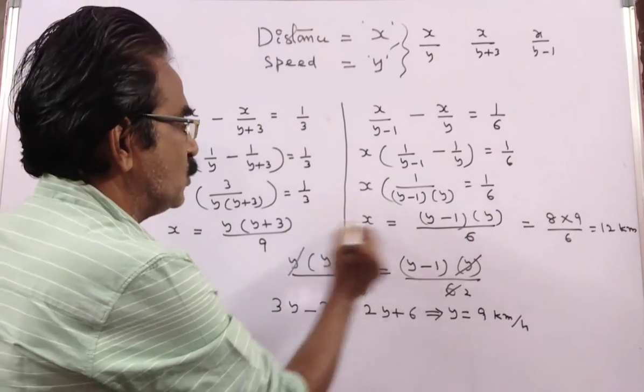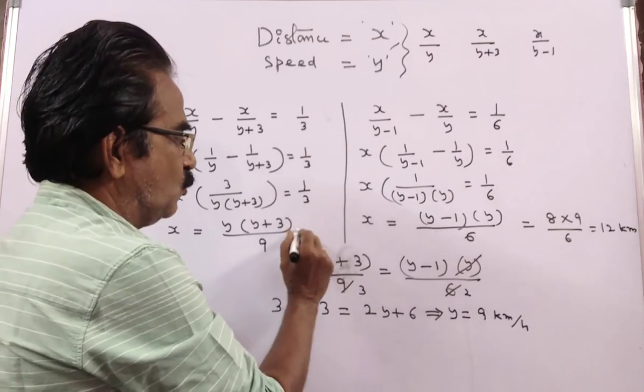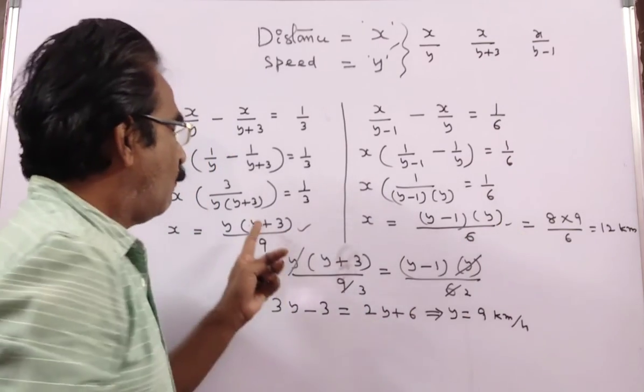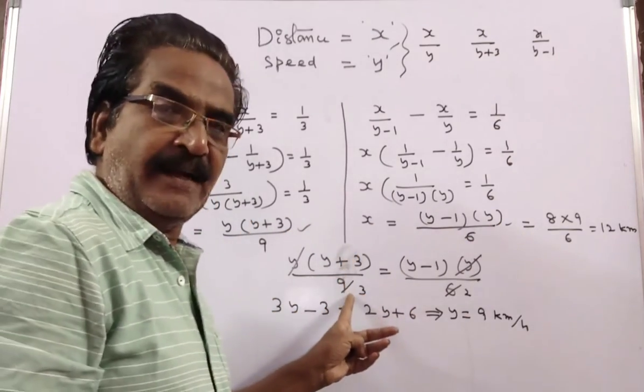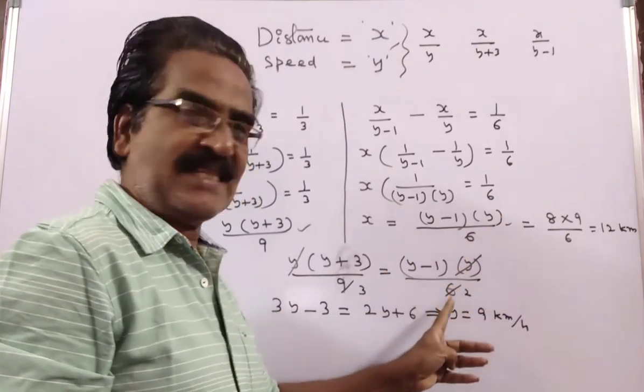Here, these two are equal - this is x and this is x. So y(y plus 3) by 9 equals (y minus 1)(y) by 6.